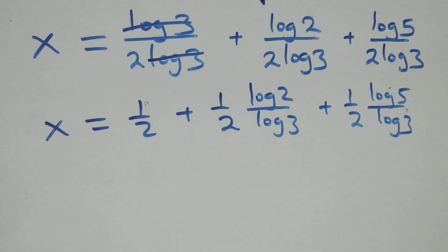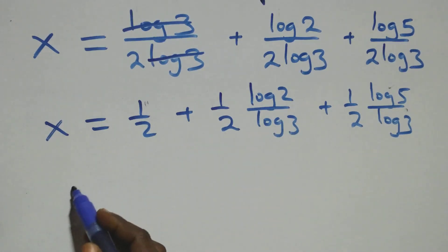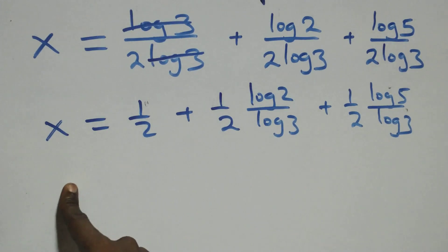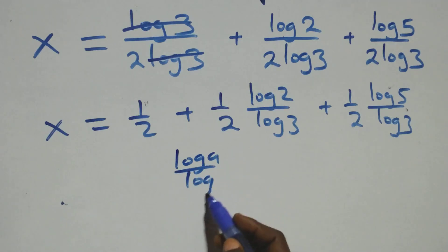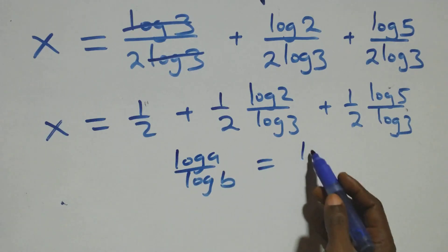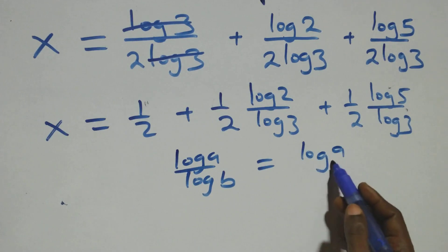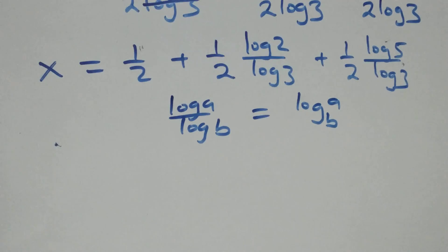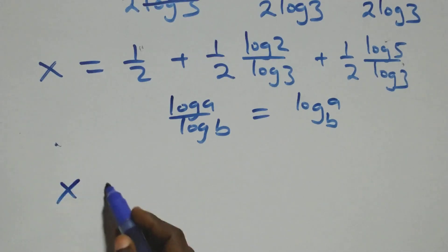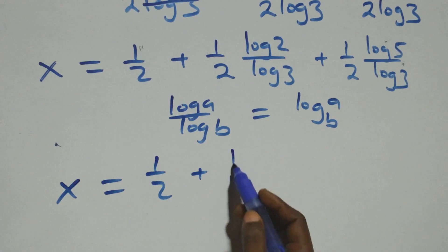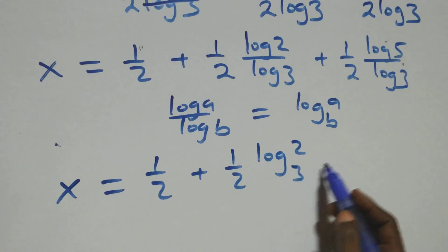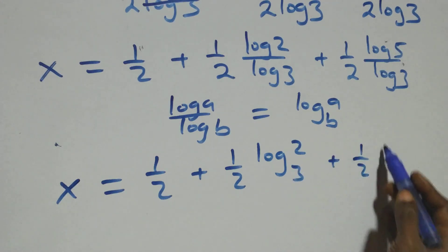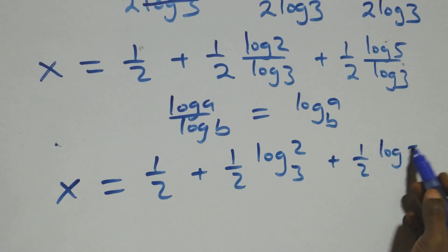Here we apply the change of base formula. When we have log A over log B, this is the same as log A to base B. So we have x equals 1/2 plus (1/2) log 2 base 3 plus (1/2) log 5 base 3.